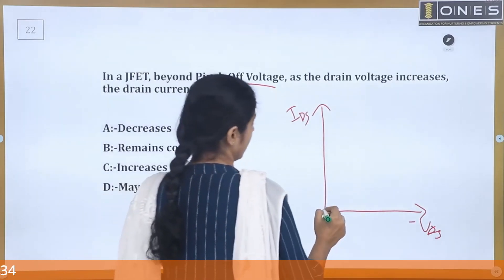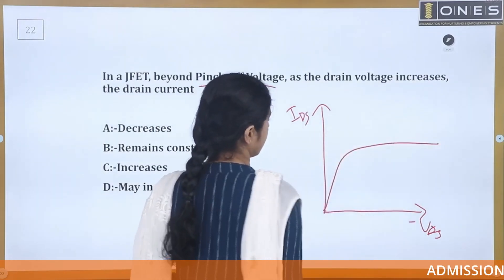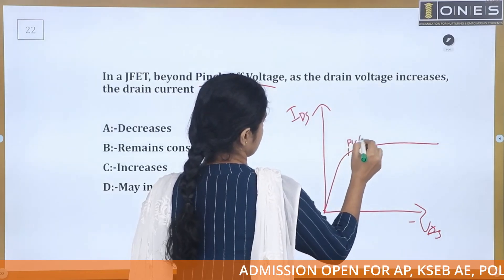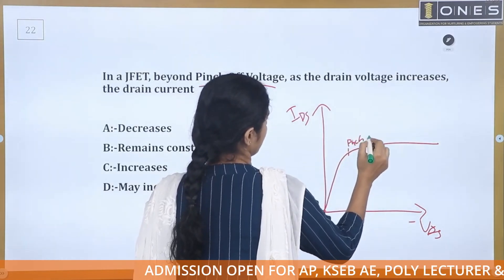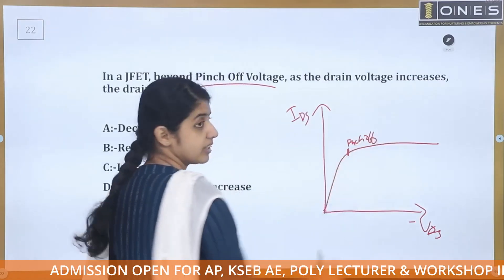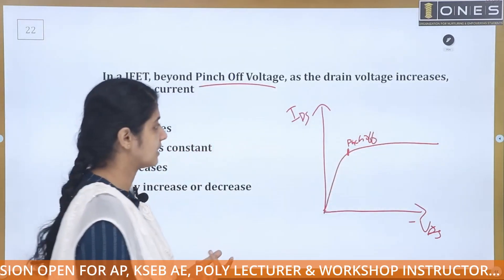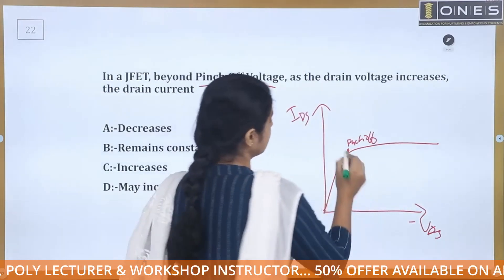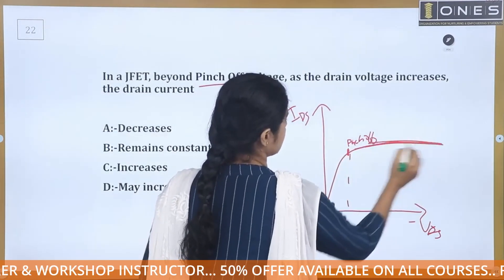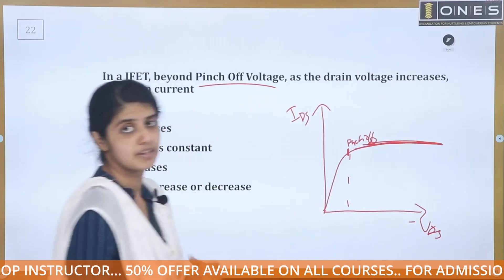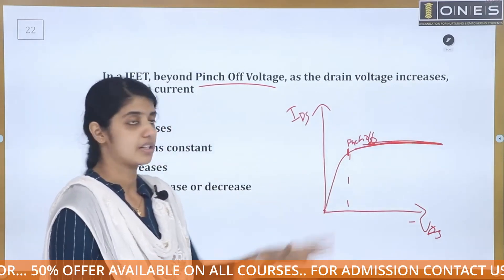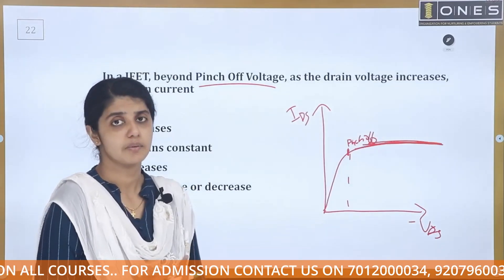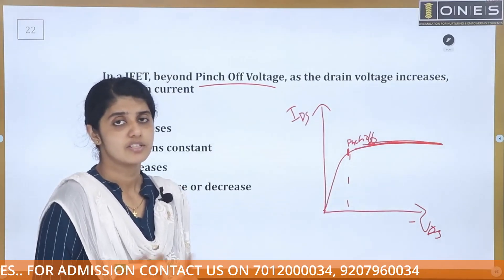In the JFET's case, we have a pinch-off voltage. Above that voltage, how do we change the current? To change the current, we change the Vgs. At the pinch-off voltage point on the graph, the current IDS will vary for a particular Vgs value. We will learn the IDS equation — Shockley's equation.